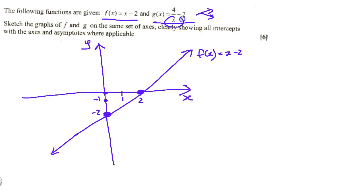The first asymptote will be x equals to 0, because if x equals to 0, this function is undefined. So the first asymptote equation will be x equals to 0. The other one is y equals to minus 2.